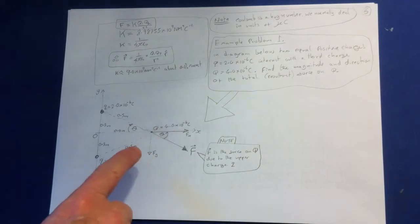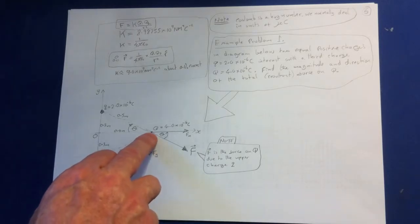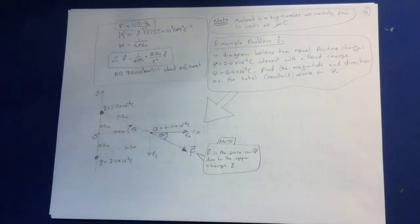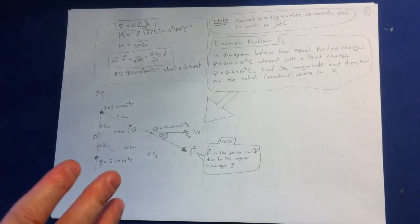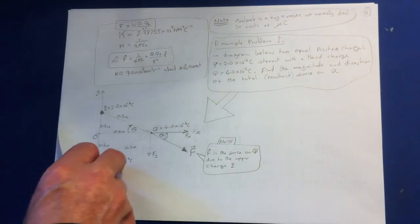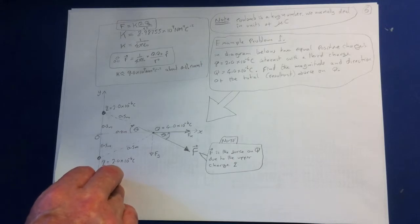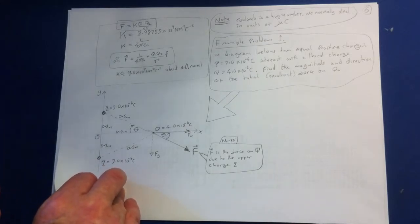Yeah, I've written the question here, so you might want to read that as well. So in the diagram below, two equal positive charges Q equals two times ten to the minus six coulombs, interact with a third charge Q equals four times ten to the minus six coulombs. Find the magnitude and direction of the total resultant force on Q. So we want to find the total resultant force here. So have a think about how you might do that, and if you're familiar with vectors, have a think about that. And then continue with the video, and I'm just going to give you the solution to that. It's quite involved, so don't worry if you don't know how to do this.